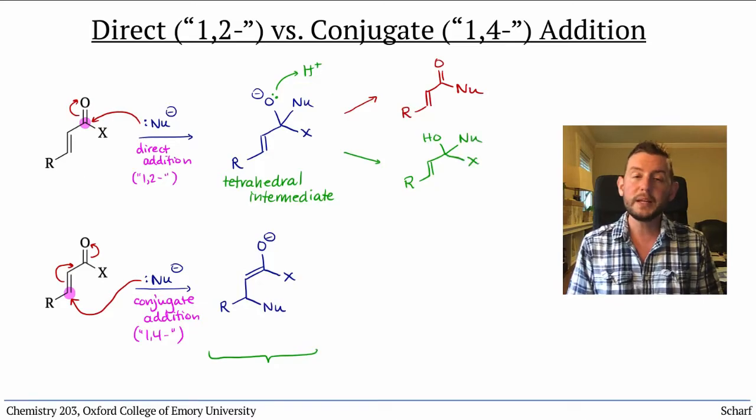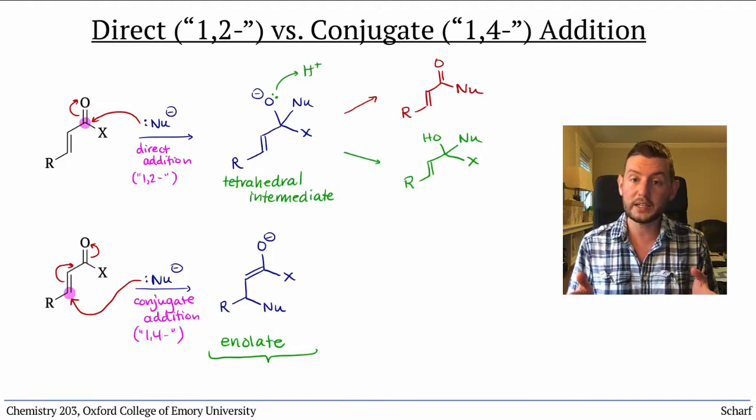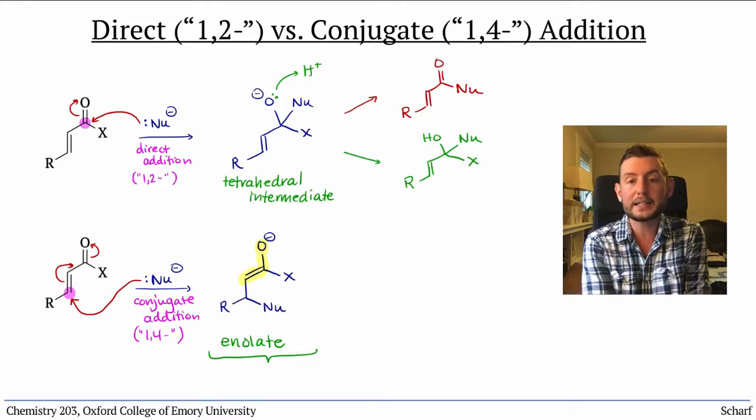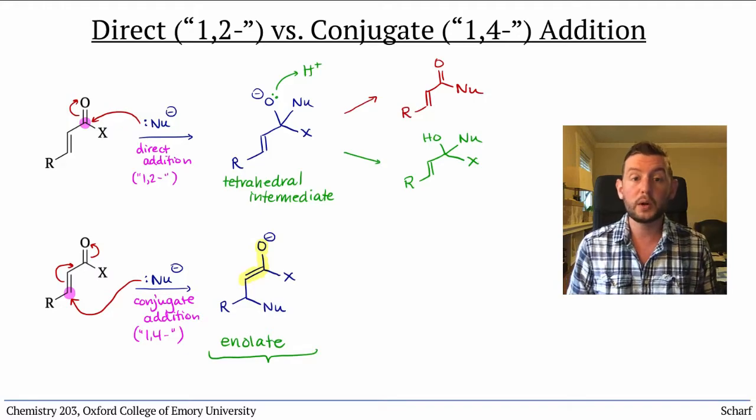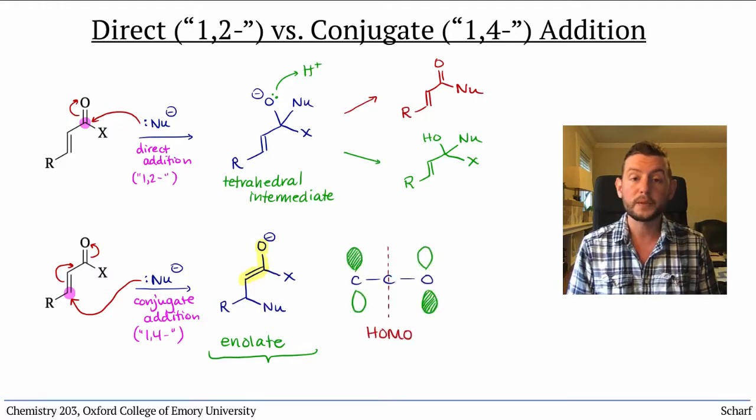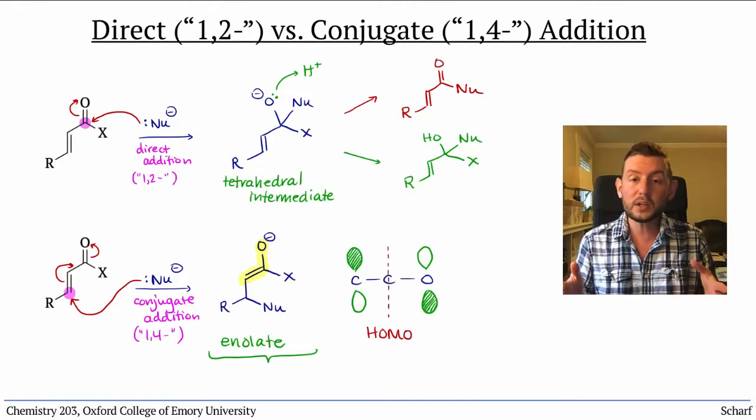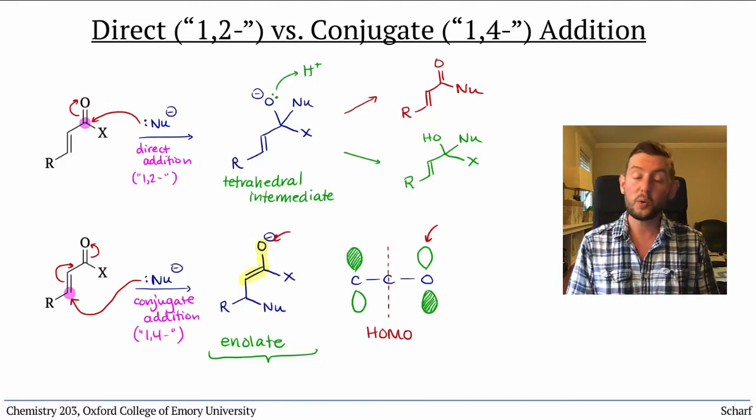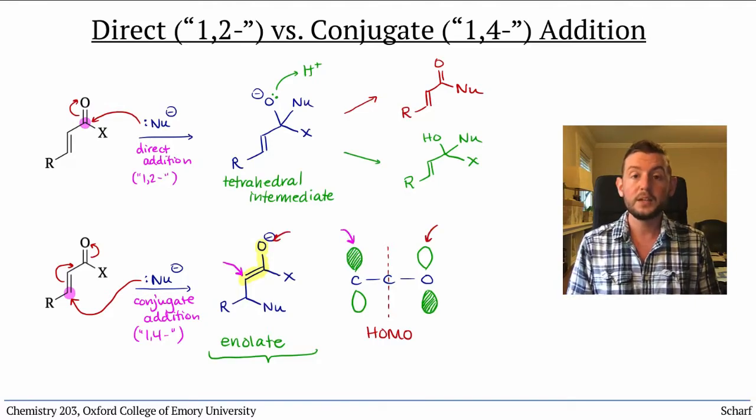The intermediate of conjugate addition, an enolate, is itself a conjugated system of three p orbitals. Since it's negatively charged we know it's likely to act as a donor of electrons, so we're interested in its HOMO, which has one node.